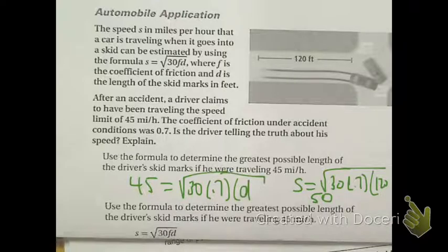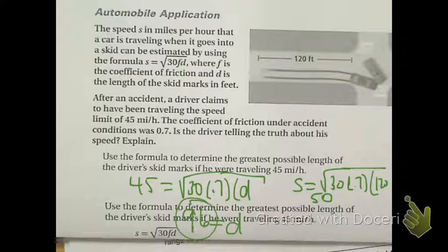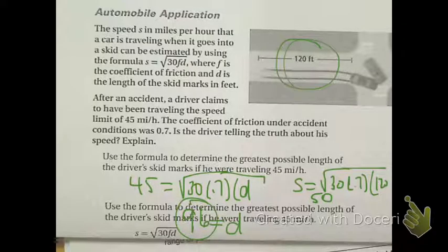In this case, those of you that did it this way, what was the length of the skid mark? 96. In this case, your skid mark was 96. So in this case, if his skid mark, if going 45 miles per hour your skid mark was 96, his was actually 120. Was he speeding? Yes. So two ways to approach that problem. Any questions on that?